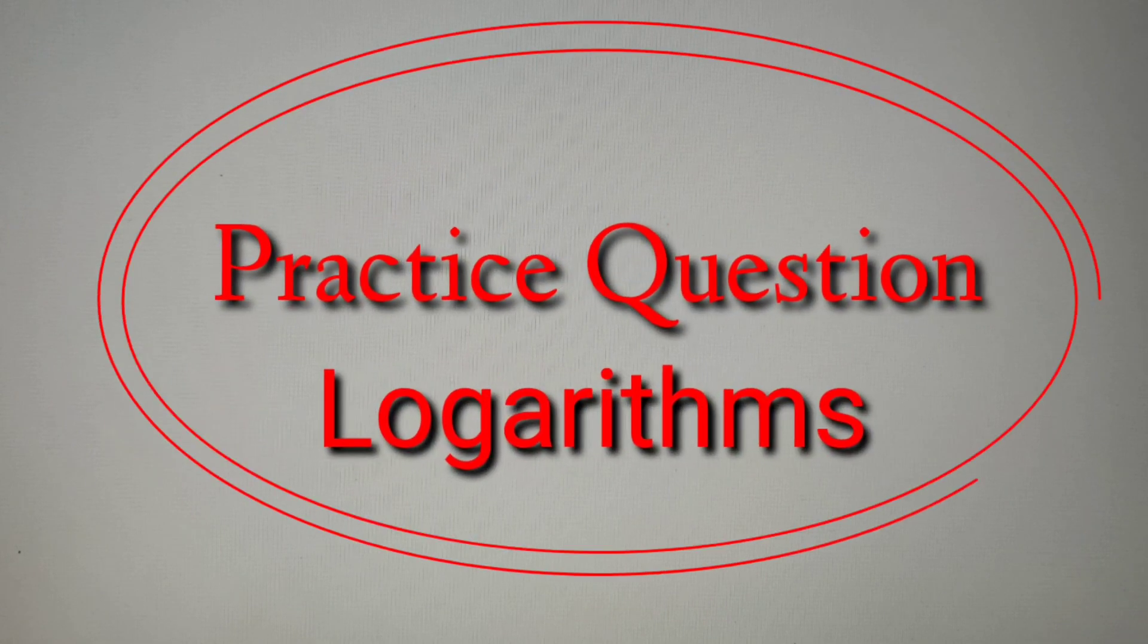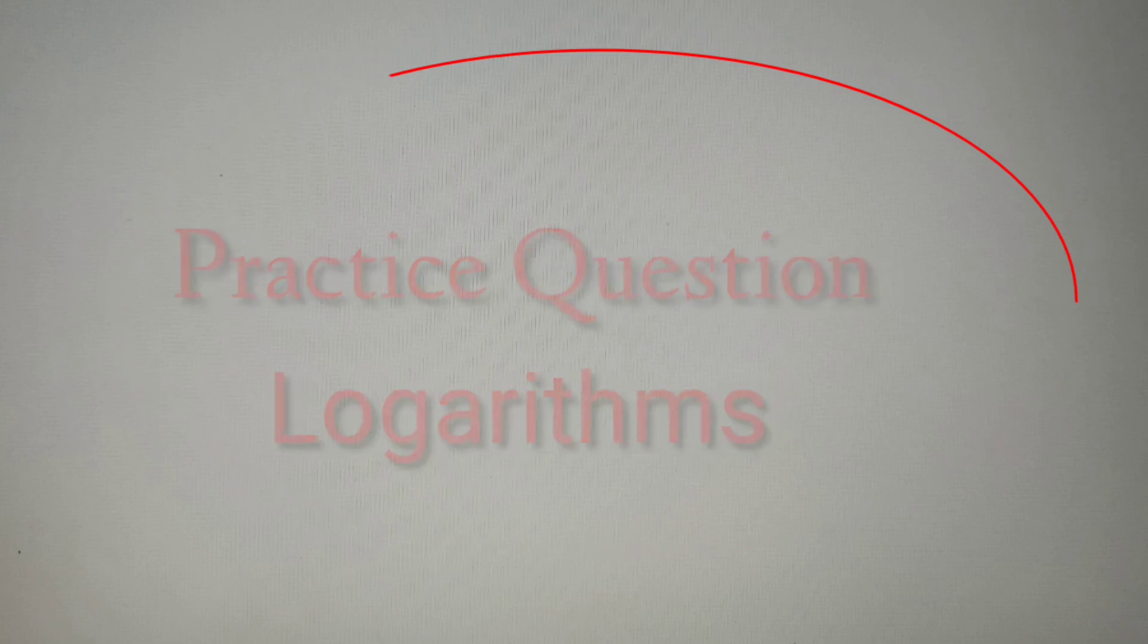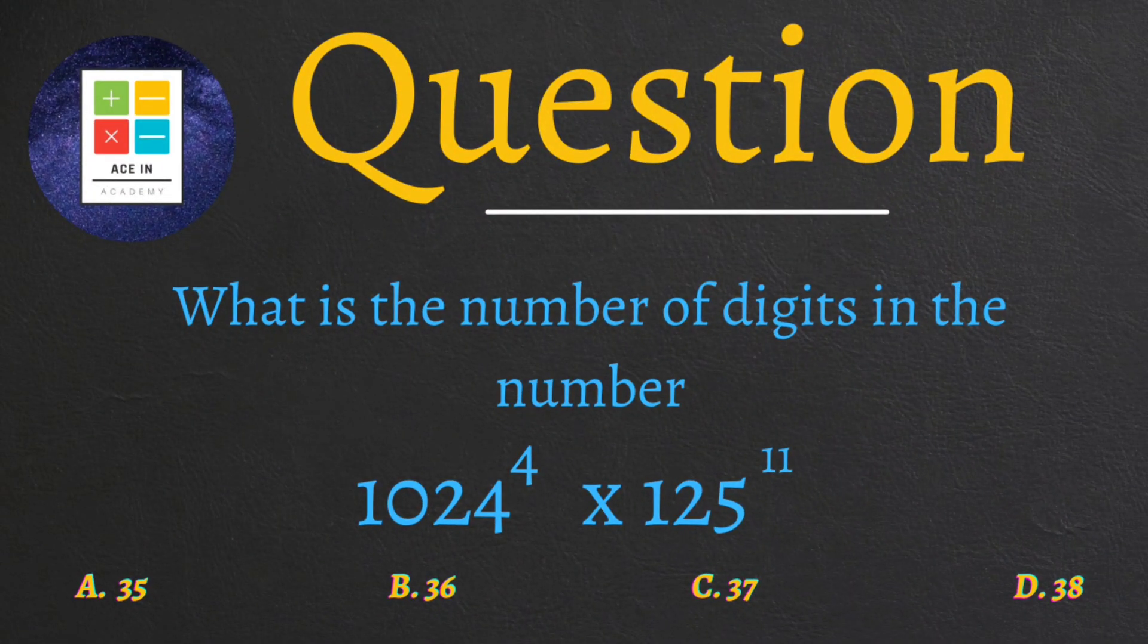in this video we'll solve another question and the question is as follows: What is the number of digits in the number 1024 raised power 4 into 125 raised power 11? Now we are provided with four options for this question and the options are as follows: A) 35, B) 36, C) 37, and D) 38.